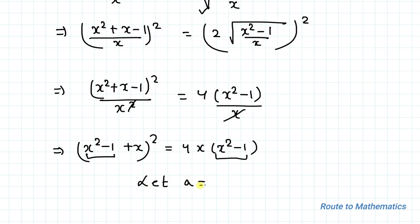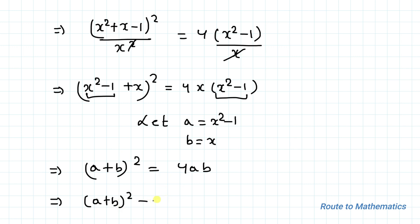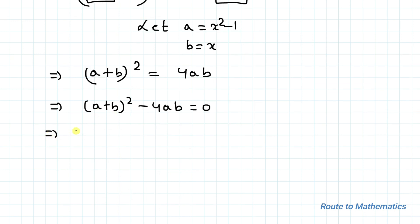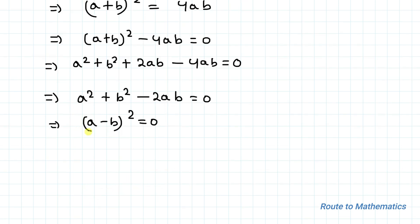Let's assume a equals x²−1 and b equals x. Substituting, we can write (a+b)² equals 4ab. This implies (a+b)² minus 4ab equals 0. Expanding using the identity (a+b)² = a²+b²+2ab, we get a²+b²+2ab−4ab equals 0, which simplifies to a²+b²−2ab equals 0, or (a−b)² equals 0.